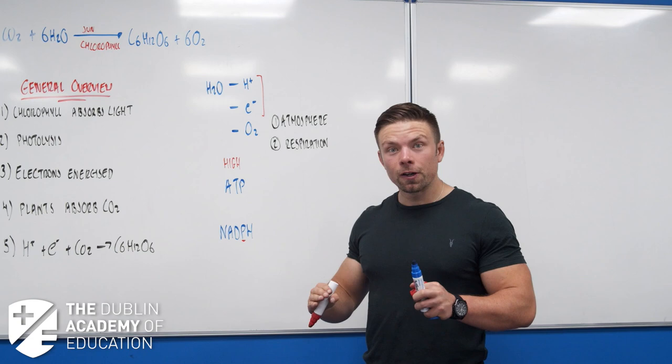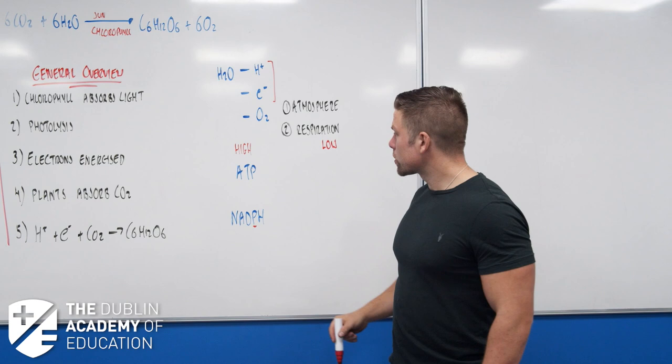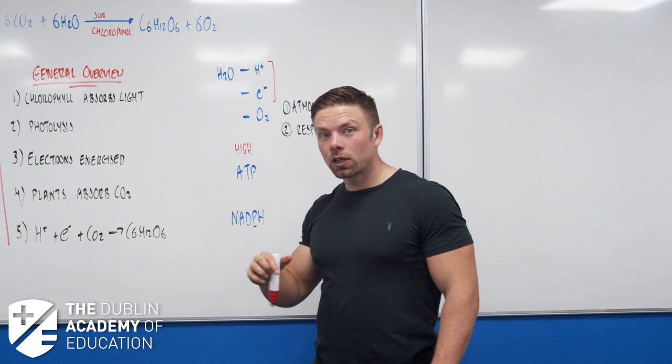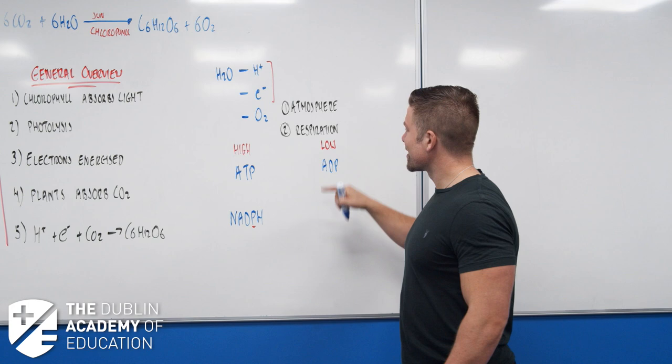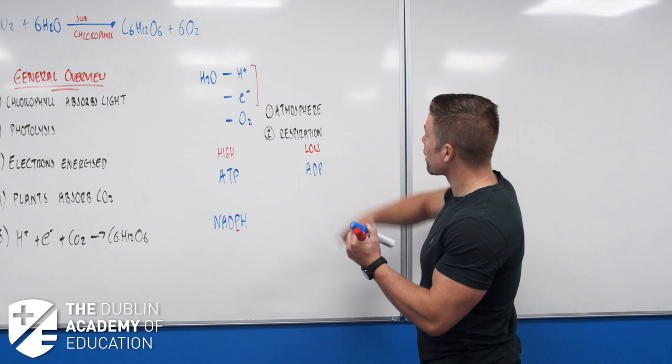Think of them like a bus, and the people on the bus being the energy - they are a full bus. The bus drives into town and drops off all the people; they are then low energy carriers. ATP, which stands for adenosine triphosphate, is the high energy molecule. The low energy molecule is ADP, adenosine diphosphate. Tri means three, di means two.